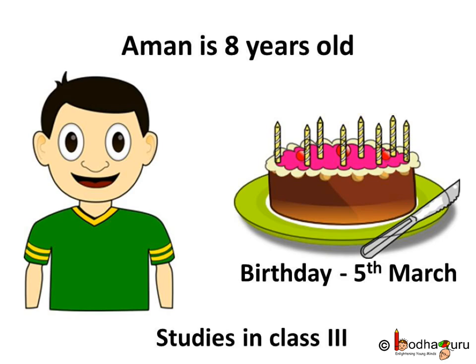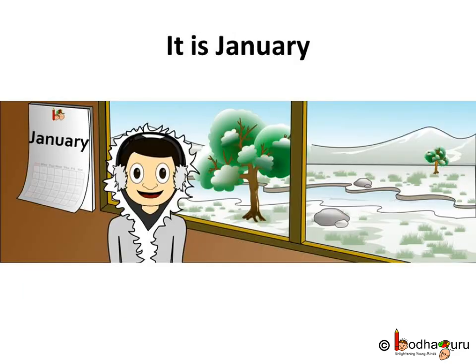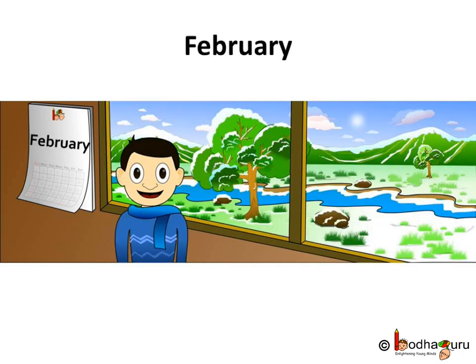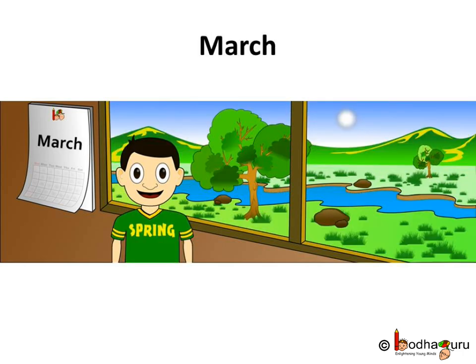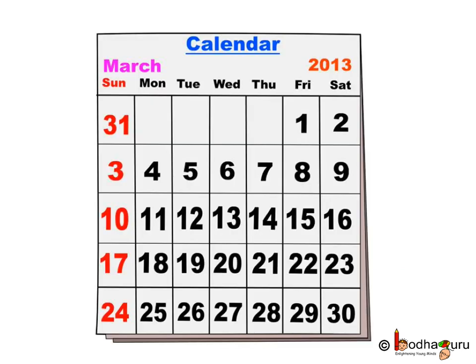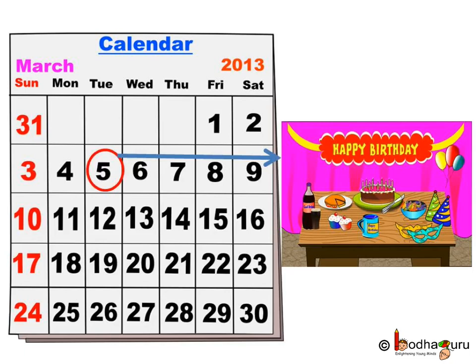How long does Aman have to wait for his birthday? Well, look at the calendar. It is January right now. Then comes February, then the month of March. In March, there are days 1, 2, 3, 4, 5. Yes! 5th of March — this is Aman's birthday.